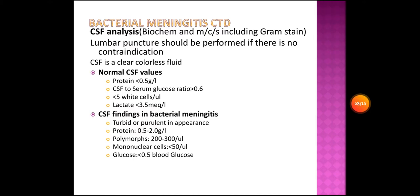For bacterial meningitis, cerebrospinal fluid analysis should include biochemistry, microscopy, culture and sensitivity, and Gram stain. Lumbar puncture should be performed if there is no contraindication. Normal CSF values are: protein less than 0.5 g/L, CSF to serum glucose ratio above 0.6, white blood cells less than 5 per microliter, and lactate less than 3.5 mmol/L.